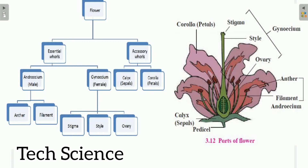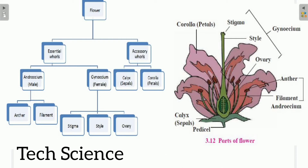Hello guys, today we have a new point: sexual reproduction in plants. This point is from the reproduction chapter and may be relevant for class 8, 9, 10, and even 11 and 12. Here we are discussing sexual reproduction in plants, and we know that the flower is the structural and functional unit of sexual reproduction in plants.